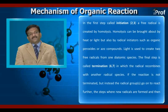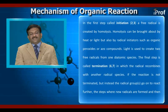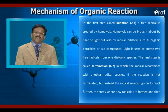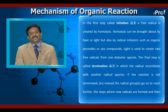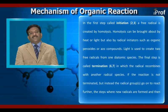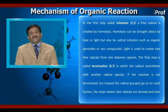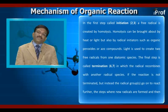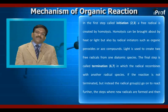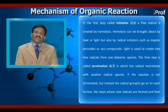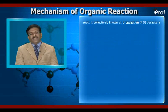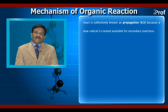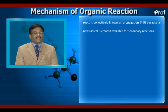The final step is called termination — steps six and seven — in which the radical recombines with another radical species. If the reaction is not terminated, but instead the radical groups go on to react further, the steps where new radicals are formed and then react are collectively known as propagation, steps four and five, because a new radical is created which is available for secondary reactions.